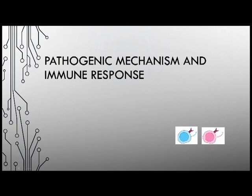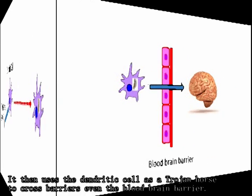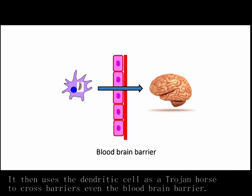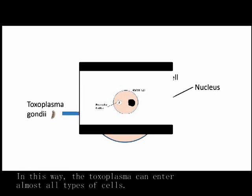Pathogenic mechanism and immune response. After infection, the Toxoplasma gondii enters the dendritic immune cells in the intestine. It then uses the dendritic cell as a Trojan horse to cross barriers, even the blood-brain barrier. In this way, the Toxoplasma can enter almost all types of cells.